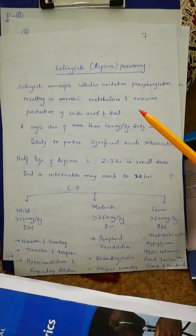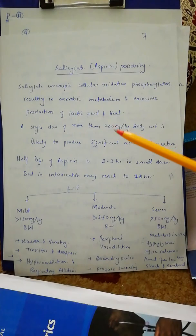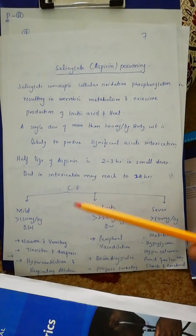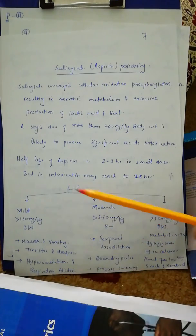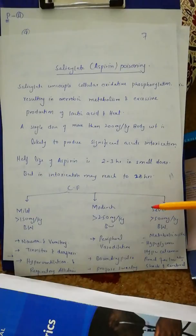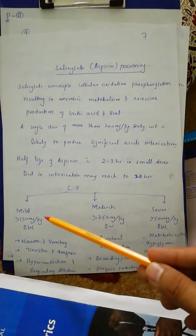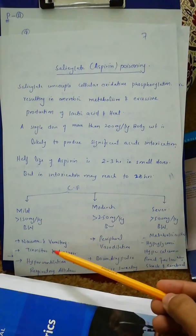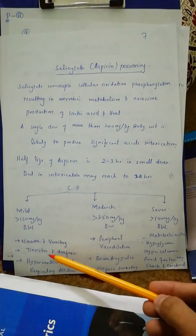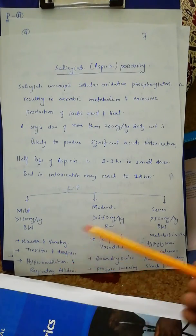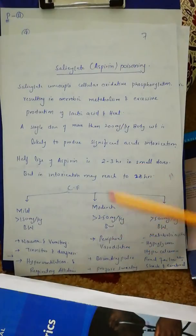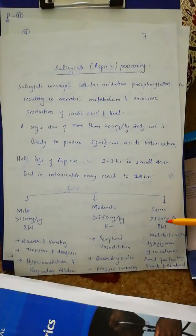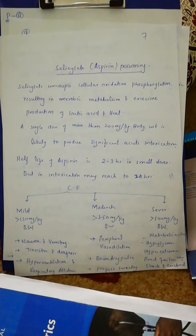Clinical features of aspirin poisoning vary by severity. In mild poisoning (more than 150 mg per kg body weight): nausea, vomiting, tinnitus, tinnitus, hyperventilation, and respiratory alkalosis. In moderate poisoning (more than 250 mg per kg): peripheral vasodilation, bounding pulse, and profuse sweating. In severe poisoning (more than 500 mg per kg): metabolic acidosis, hyperglycemia, hypercalcemia, renal failure, shock, and cerebral edema.